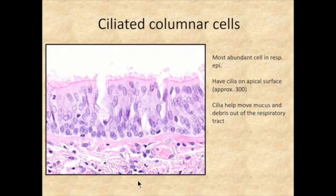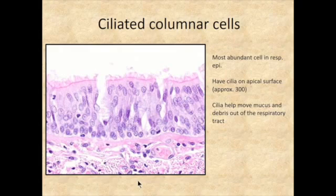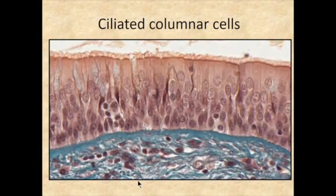The ciliated columnar cell is the most abundant. It's got lots and lots of cilia on each surface, and the cilia rhythmically beat — they're motile cilia — and they bring mucus and other particles trapped in the mucus up out of the respiratory tract so that it can be swallowed by the pharynx. Here is another picture showing the pseudostratified columnar epithelium with a really nice line of cilia.